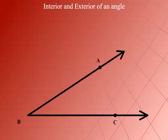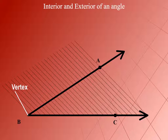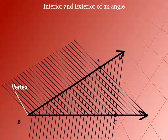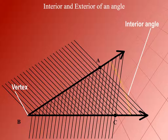Look at this angle ABC with its vertex at B. Let us shade the portion of the angle bordering BC where BA lies, and also shade the portion bordering BA where BC lies. The portion common to both shadings is called the interior of angle ABC. Remember that the interior of an angle is not a restricted area — it extends indefinitely since the two sides of an angle are rays that extend indefinitely.